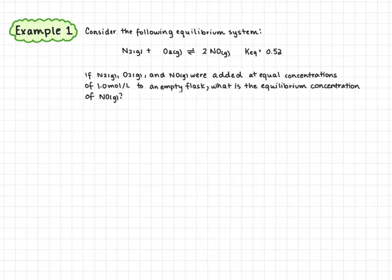Consider the following equilibrium system. We have nitrogen gas plus oxygen gas forming nitrogen monoxide gas, and the Keq value for this is 0.52. If nitrogen gas, oxygen gas, and nitrogen monoxide were added at equal concentrations of one mole per liter to an empty flask, what is the equilibrium concentration of nitrogen monoxide?